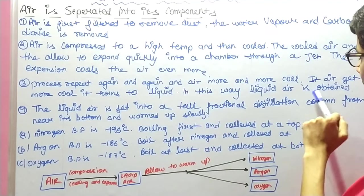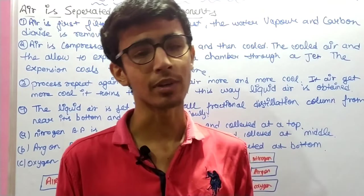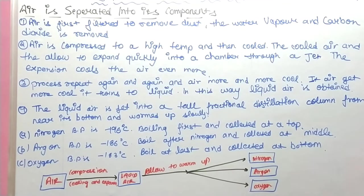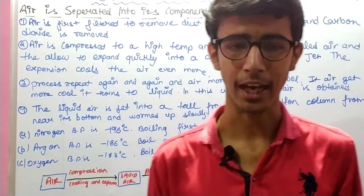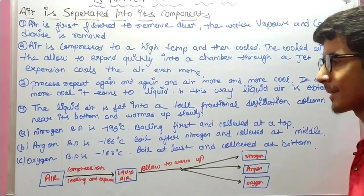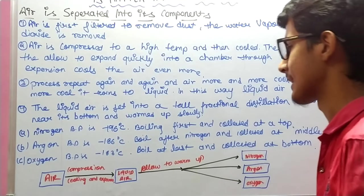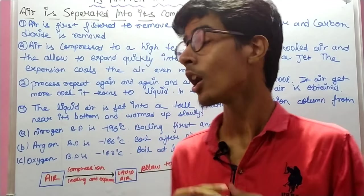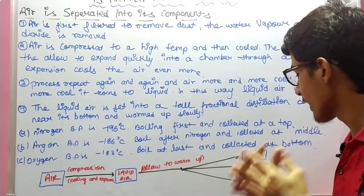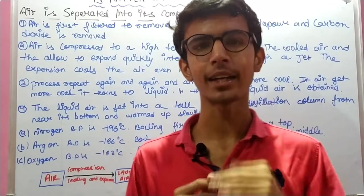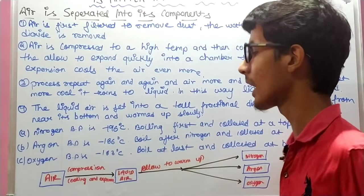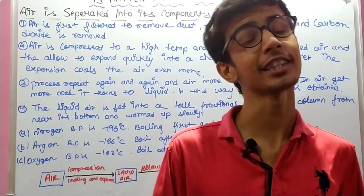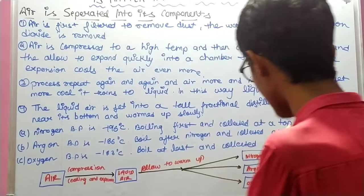Eventually the air turns to liquid. Liquid air is obtained and fed into a tall fractionating column. The boiling point of nitrogen is minus 196 degrees Celsius, which is the lowest, so nitrogen starts to boil first and rises to the top. Then argon boils next.